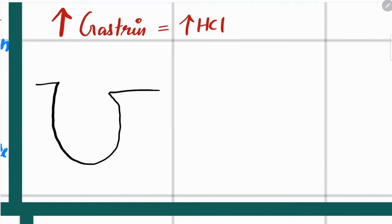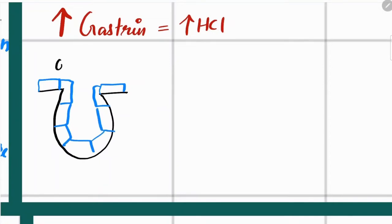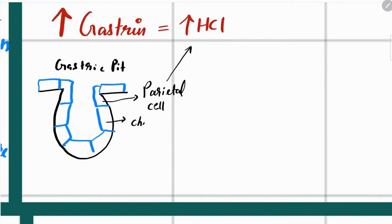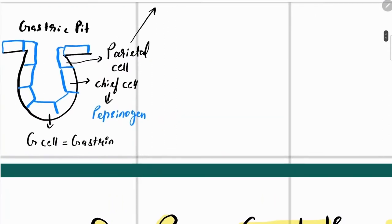In your stomach you have gastric pits which contain several gastric glands. Parietal cells are responsible for secretion of hydrochloric acid, chief cells are responsible for secretion of pepsinogen, and G cells are responsible for secretion of gastrin.